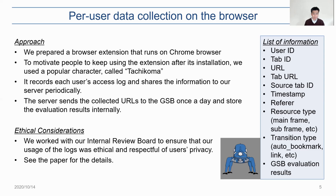One of the biggest advantages of our data collection is that we can obtain user ID and tab ID. They are useful to identify users and types of the logs. Therefore, we can minimize the scope of analysis by filtering logs with the user ID and tab ID, which makes it easy to analyze large-scale web access logs. Before conducting this work, we also considered ethical issues by consulting with our internal review board and ensured that our usage of the logs was ethical and respectful of users' privacy.